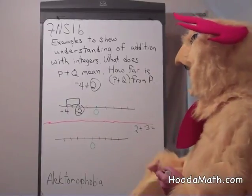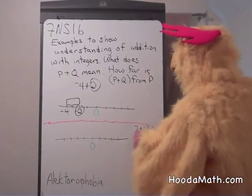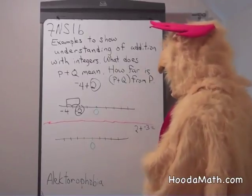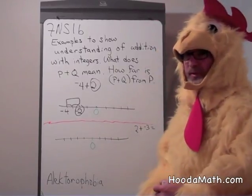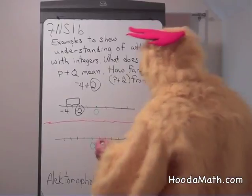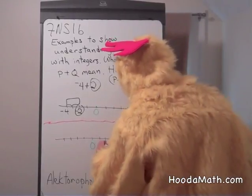Now, we're going to do this with a different number: 2 plus negative 3. 2 is located 2 units to the right of 0. 1, 2. This is 2.